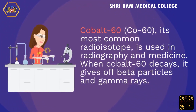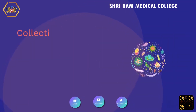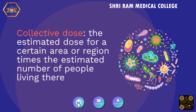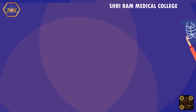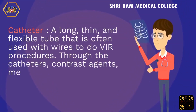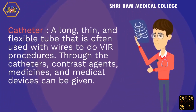Cobalt-60 (Co-60), its most common radioisotope, is used in radiography and medicine. Collective dose: the estimated dose for a certain area or region times the estimated number of people living there. Catheter: a long, thin, and flexible tube that is often used with wires to perform VIR procedures. Through catheters, contrast agents, medicines, and medical devices can be given.